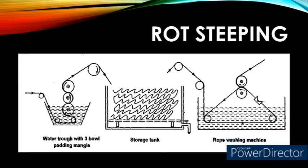Rot steep desizing is the oldest and cheapest method of desizing. No special chemical is used. The cloth is first immersed in warm water at 40°C and then immediately passed through a padding mangle to give 100% expression. The cloth is then piled in a tank and allowed to stand for 24 hours. Microorganisms naturally present in water multiply and secrete starch-liquefying enzymes, which hydrolyze the starch in the sized gray fabric. The cloth is finally washed with water. Disadvantages include the need for large floor space, it is a slow process involving several hours, and there is a danger of mildew attacking and weakening the cloth if steeping is not properly monitored.